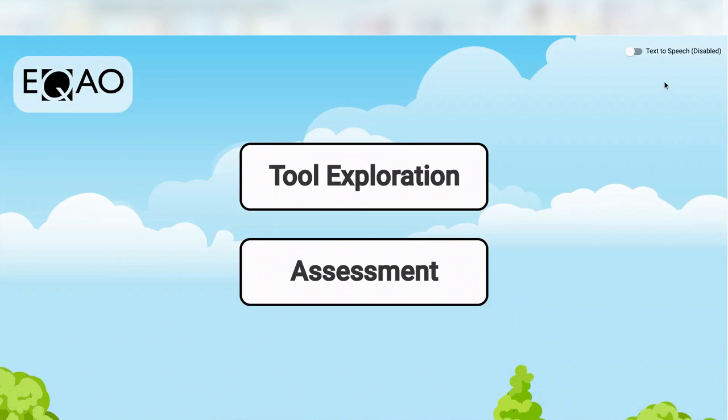If I look up to the top right of my page you'll see there is a text to speech toggle. I can turn that on or off. Let's turn it on and you can actually hear the words on the screen being read to you. I'm going to hover over it. Tool exploration. Assessment. And I'm now going to turn it off because I don't need it but it is there as an option.